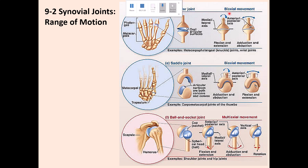Biaxial joints move along two axes and are divided into condylar and saddle joints. Condylar joints have an oval-shaped depression and bony prominence, allowing flexion, extension, abduction, and adduction. Examples include the metacarpophalangeal joints and the wrist and ankle areas where forearm and leg bones articulate with carpal and tarsal bones.